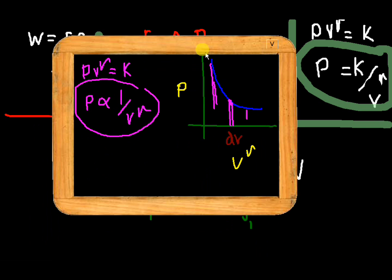Hi guys, today I am going to show you the work done in an adiabatic process, how to find the relation, and so on. We know that in an adiabatic process, PV raised to gamma will be a constant.